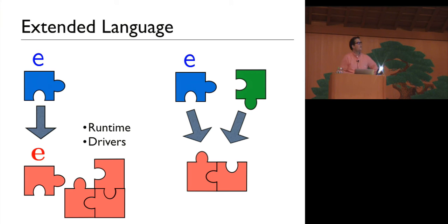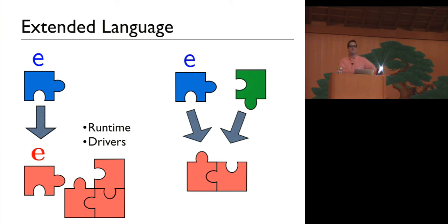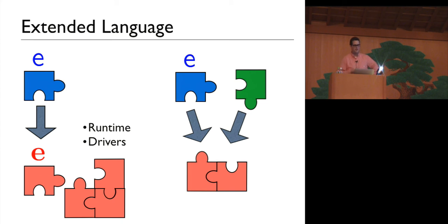Instead of a nice, beautiful, high-level source language, the programmer also has to understand how their program is compiled and how assembly code can interact with them. So if I have to reason at the assembly code level, what's the point of my beautiful source language anyway?